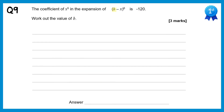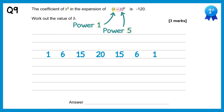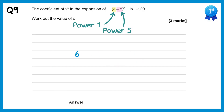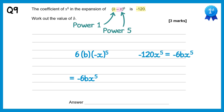In this question our a equals b and our b equals negative x, and we want the coefficient of x to the power 5. We need to take negative x to the power 5 and b to the power 1, since 5 plus 1 makes 6. The sixth row of Pascal's triangle gives us the coefficient 6 for b to the power 1. So we have 6 times b to the power 1 times negative x to the power 5, which equals negative 6b·x to the power 5. We're told the coefficient is negative 120, so negative 120 equals negative 6b, giving b equals 20.